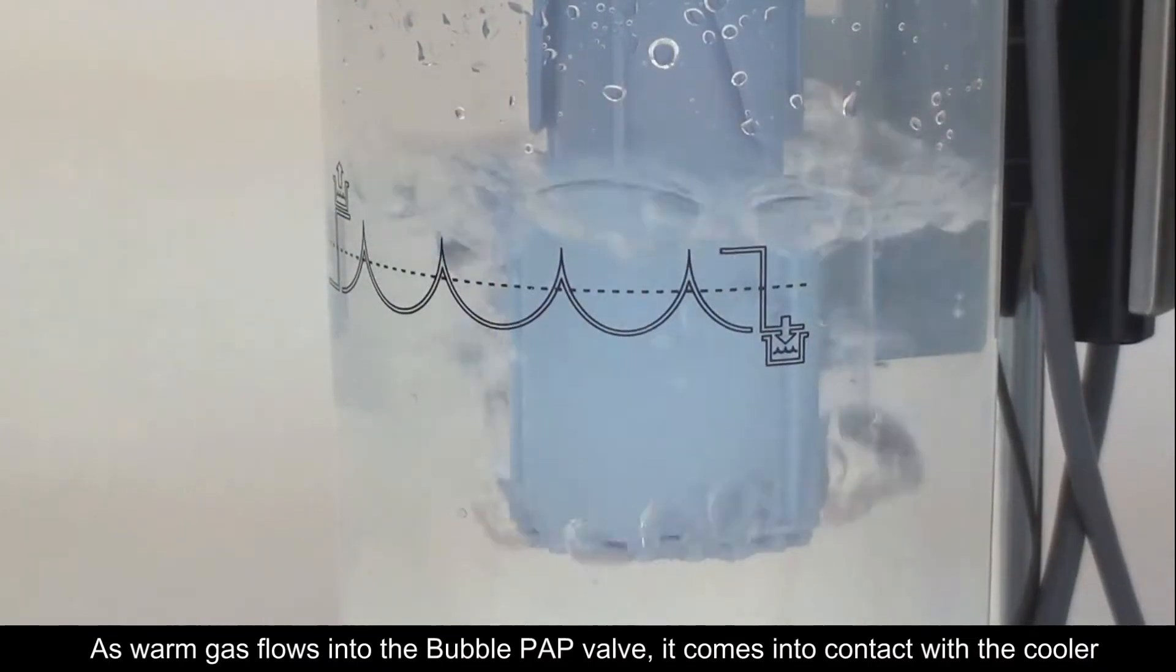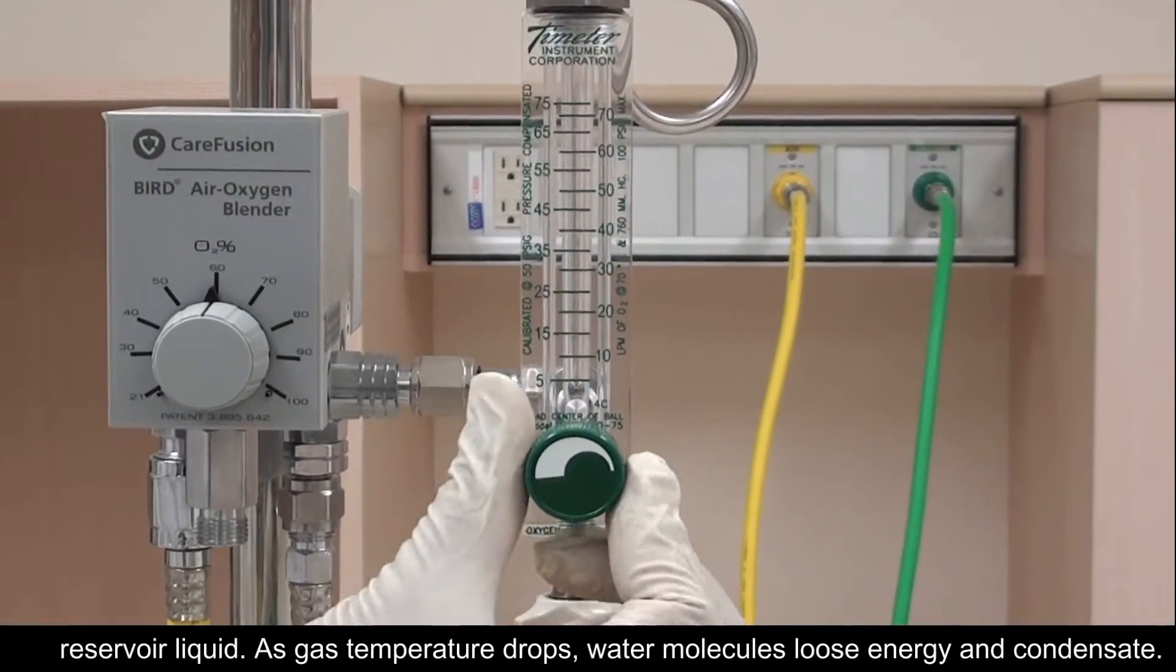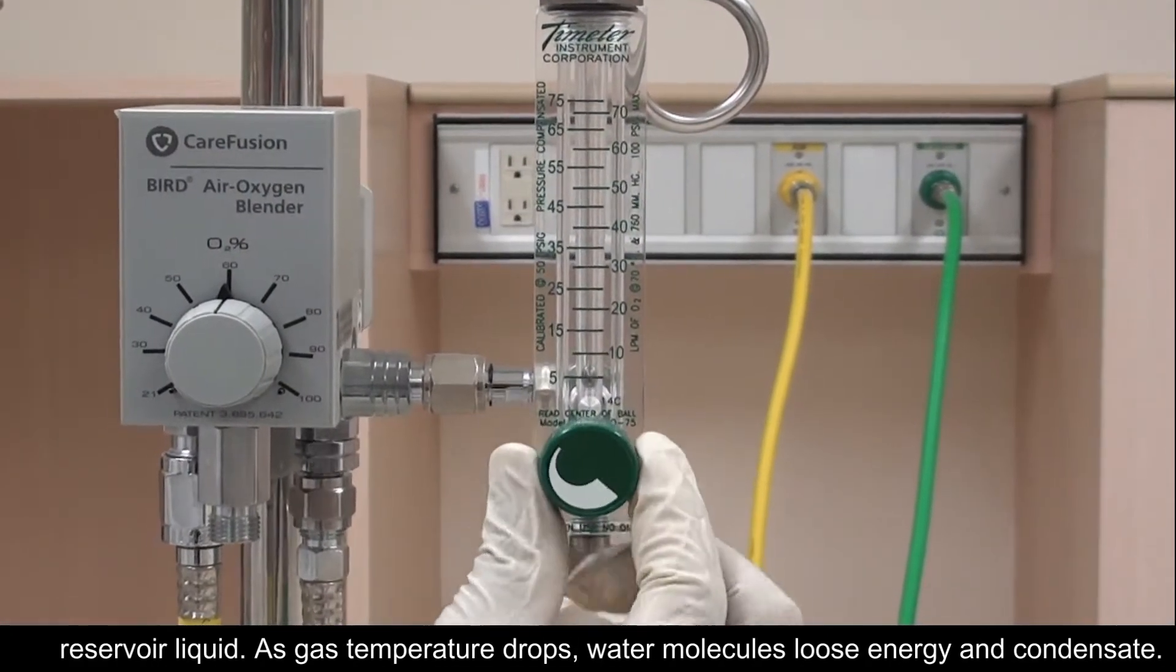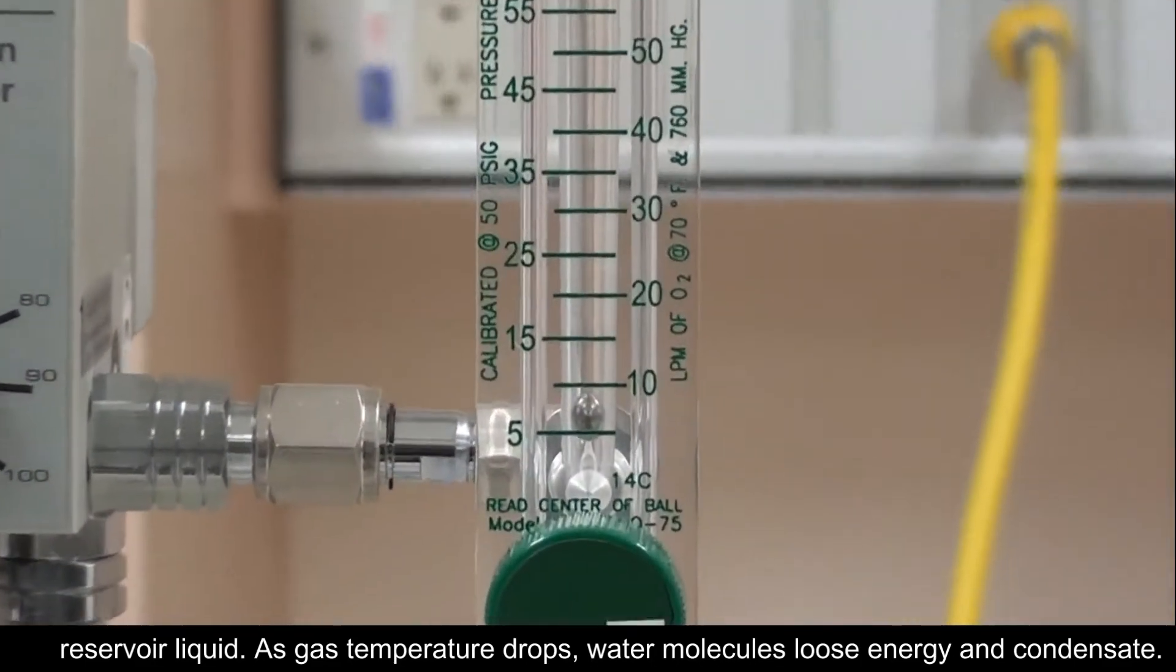As warm gas flows into the bubble PEP valve, it comes into contact with the cooler reservoir liquid. As gas temperature drops, water molecules lose energy and condensate.